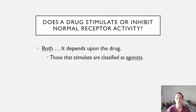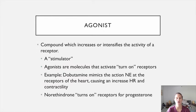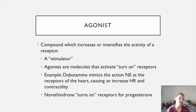There are drugs that will stimulate a receptor, and those are called agonists, and there are drugs that will block a receptor, and those are called antagonists. A drug that stimulates a receptor is an agonist, and a drug that blocks a receptor is an antagonist. When we have a drug that is an agonist, it is going to basically increase and intensify the normal action that you would see at that receptor — they turn on receptors.